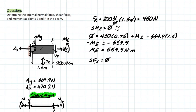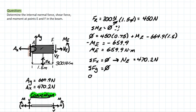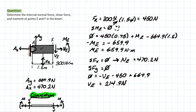Next, we take our summation of forces at X. There is only one other X component in this problem which is AX, and NE should equal that in the opposite direction but equal magnitude. Therefore NE, the normal force at E, is going to equal 470.2 newtons. Lastly, for forces in Y, we have the shear force at E going downwards, the 450 resultant force going downwards, and AY at 664.9 newtons. Solving for shear force, we get 214.9 newtons — those are the final answers for the cut at E.